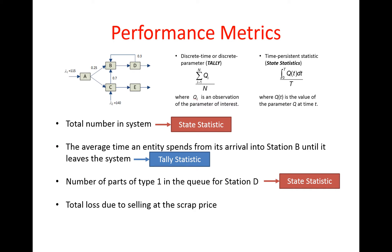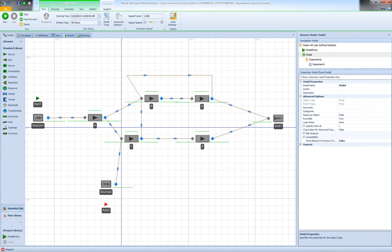Let's look at our last metric, which is the total loss due to selling at scrap price. When you think about this performance metric, it's not really a state or tally statistic, because the total loss is evaluated at the end of each replication — we only get one observation of this performance metric per replication. To implement this type of metric, we use output statistics. Let's go back to Simio and see how this is done.